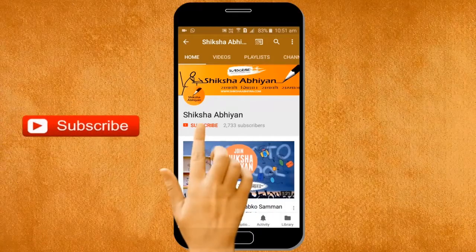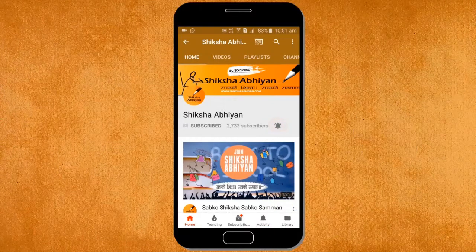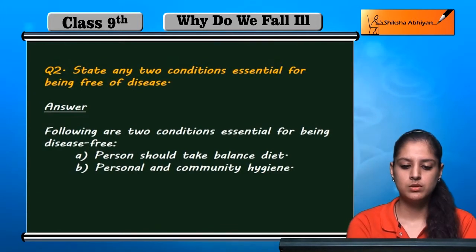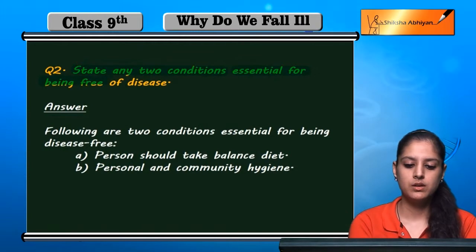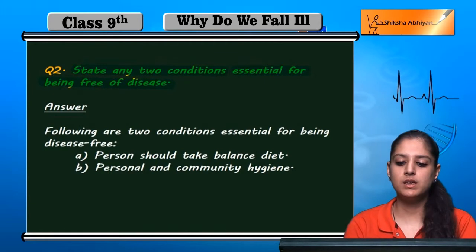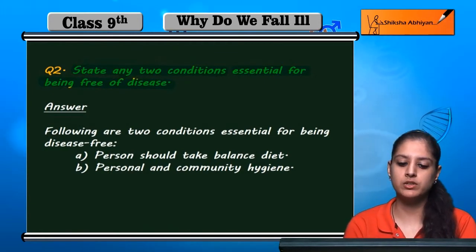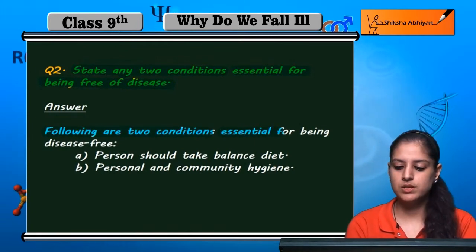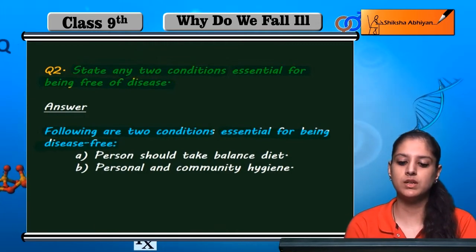Subscribe to our channel by clicking the subscribe button, click the bell button, and enjoy the latest uploads from our channel. Question 2: State any two conditions essential for being free of disease. Diseases se free honne ke liye kya do conditions hoti hain jo ki kisi bhi person ko follow karni chahiye. So following are the two conditions essential for being disease free.